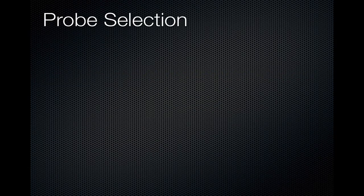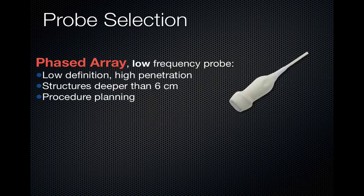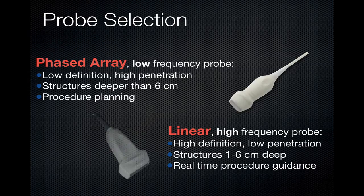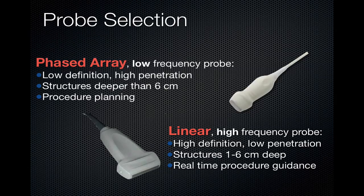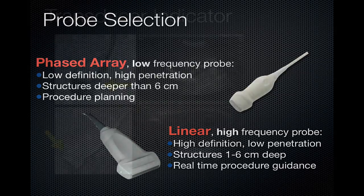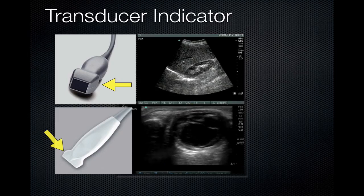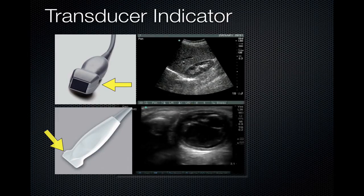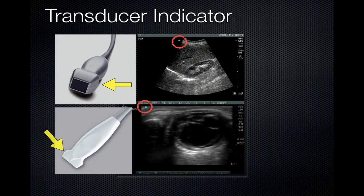Each Sonosite M-Turbo is equipped with two probes, which have different functions. The Phased Array Probe is a low-frequency probe — it provides low definition and high penetration, best for structures deeper than 6 cm, and is used when planning procedures because of the large field of view. The Linear Probe is a high-frequency probe providing high definition but low penetration, best for imaging structures 1 to 6 cm deep. Each transducer has an indicator or orientation marker on one side, used to align with the dot on the screen to help the user determine direction.